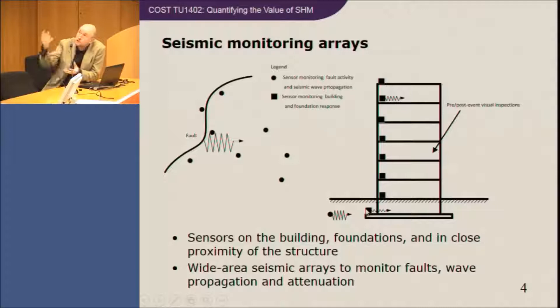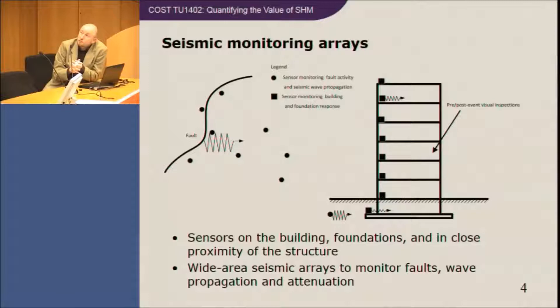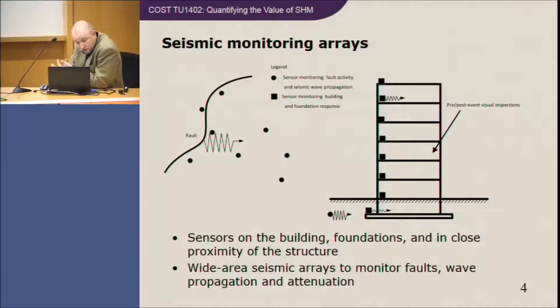This wider network is useful to measure attenuation characteristics, hazard exposure, and so on. In seismic monitoring, the presence of sensors far away from the building is not restricted only to the seismic monitoring situation. You can envisage, for example, a transportation network of a city equipped with several weight-in-motion measurement stations, which allow you to better characterize properties of the loading acting on a given bridge or a collection of bridges. So there are more sources of information than we typically assume exist.